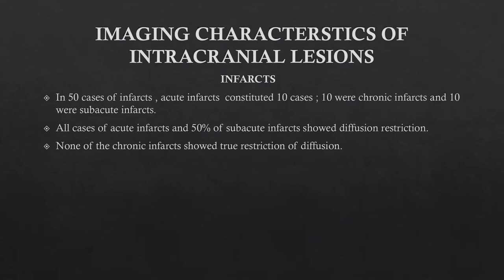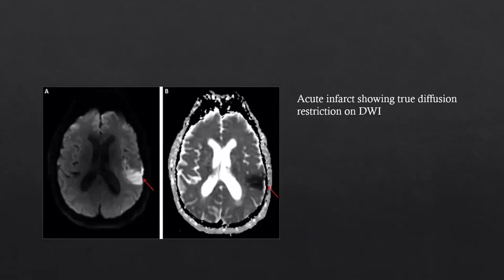Imaging characteristics of intracranial lesions — Infarcts. Of 30 cases of infarcts, 10 were acute, 10 were subacute, and 10 were chronic infarcts. All cases of acute infarcts and 50% of subacute infarcts showed diffusion restriction. None of the chronic infarcts showed true diffusion restriction. This is the image of an acute infarct showing true diffusion restriction on DWI and reversal on ADC.